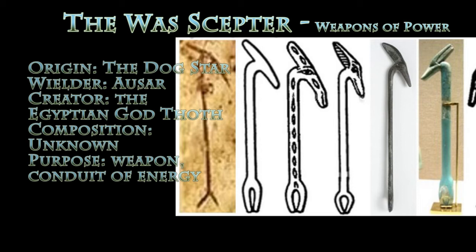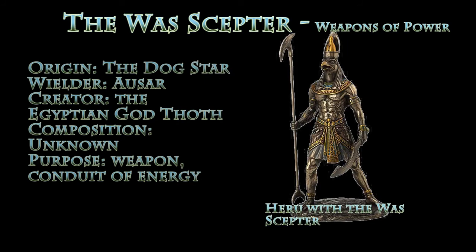This does not come without alien resources — this is a weapon of alien origin. This weapon originates in the dog star, the star system that we call the dog star. Its primary wielder was the god Osiris, and this weapon was most likely created by the Egyptian god Thoth, who was a god of knowledge and knew the secret powers of the universe.